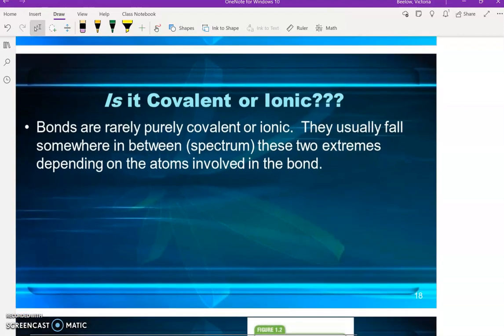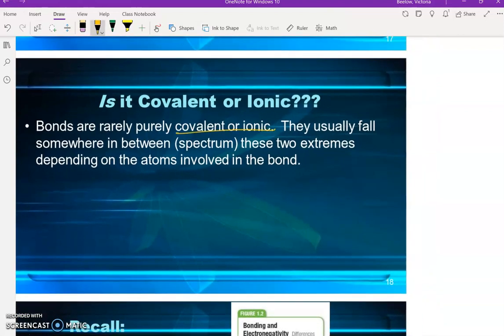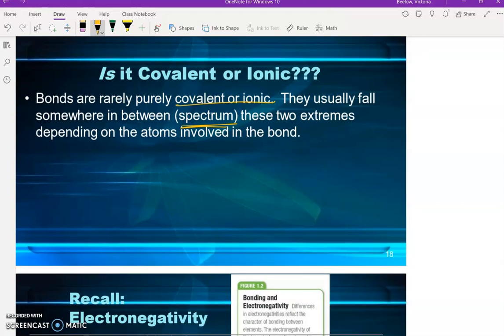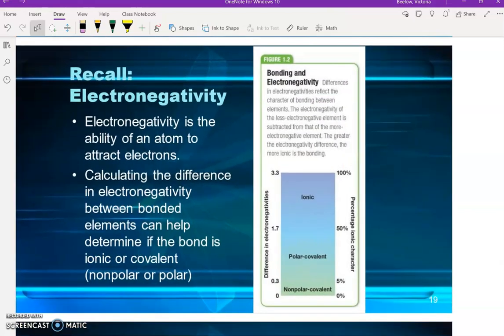So we have been talking about covalent versus ionic. Again, covalent being a bond between two non-metals, ionic being a bond between a metal and a non-metal. In all reality, it's very rare that it's black and white and you have a purely covalent or ionic bond. There's usually a range that they fall into, or a spectrum, depending on the elements and atoms involved in the bond and also their electronegativity, which we talked about in the last unit.